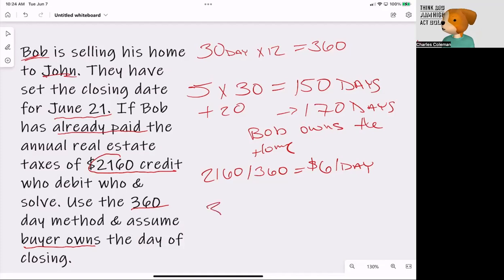So 360-day calendar minus 170 days, which is how much that Bob owned the property. And that is 190 days is how many days that John will own this property.